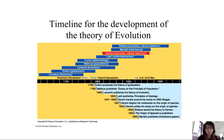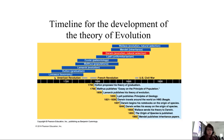Prior to Darwin, a couple of scientists deserve discussion. Linnaeus, much earlier, was also a naturalist — he's the father of taxonomy, named many things, and we still use a naming system derived from his work. Lyell published extensively on geology and informed Darwin about the age of the Earth and related topics.